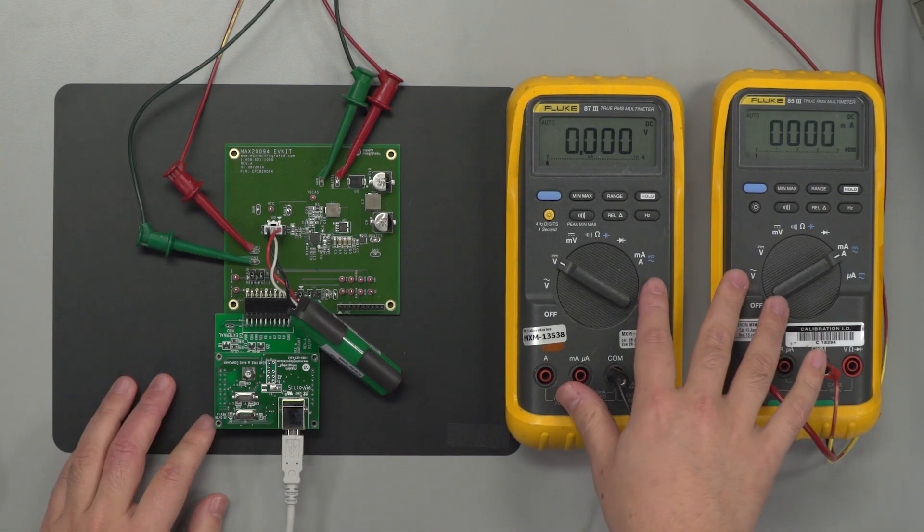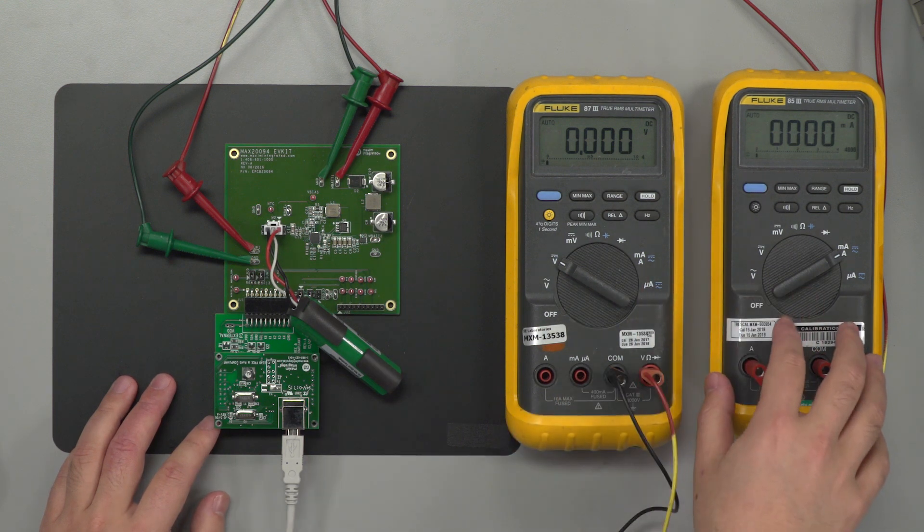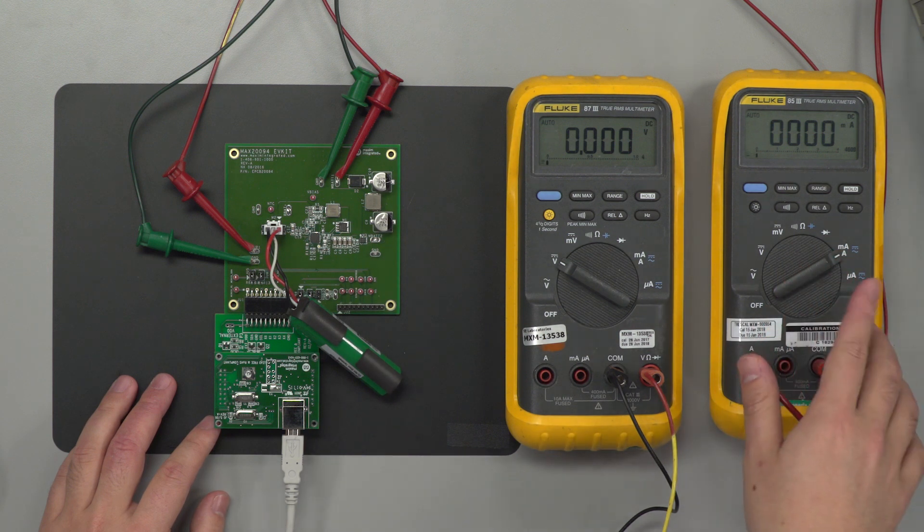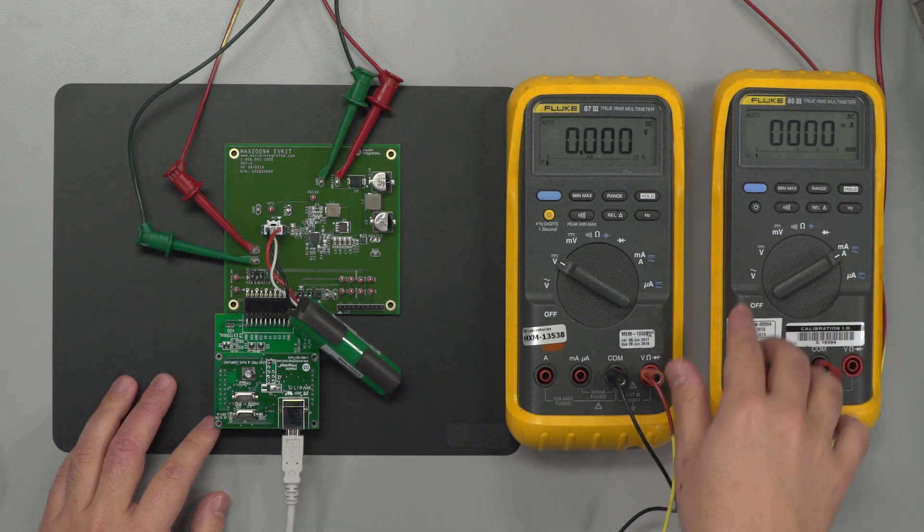Okay so I have two multi-meters to my right. The right-hand one is set to the current mode and it is in line with the 4 volt so we know how much current is passing through into the battery. So that's already done.